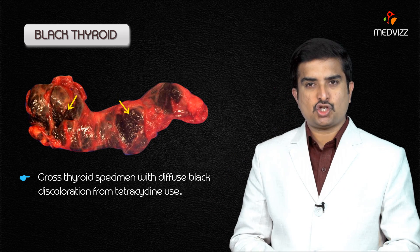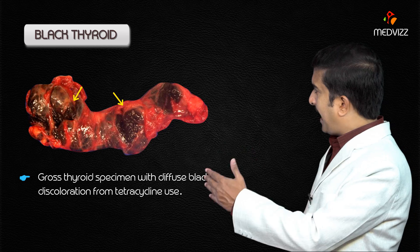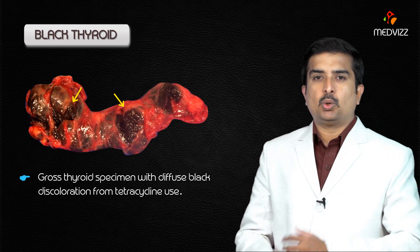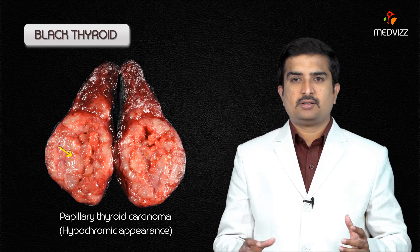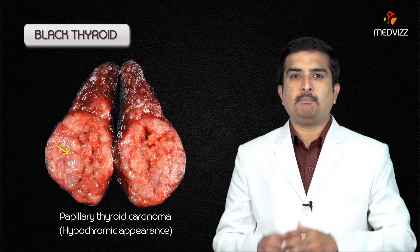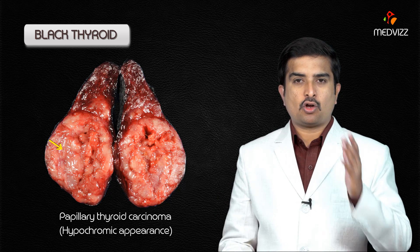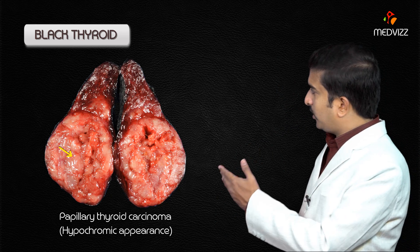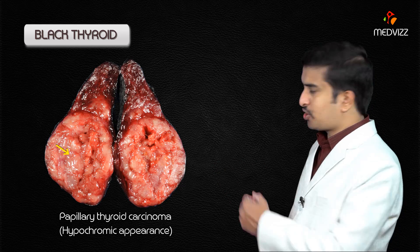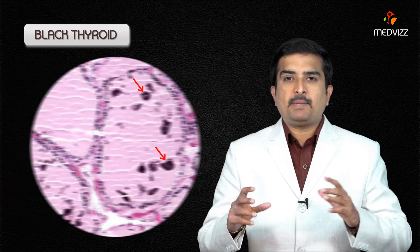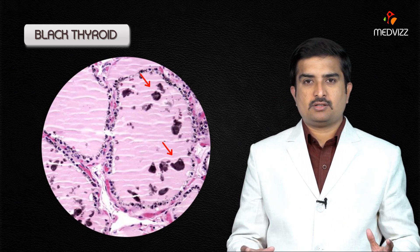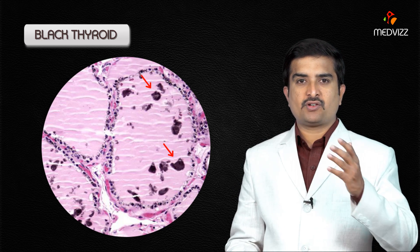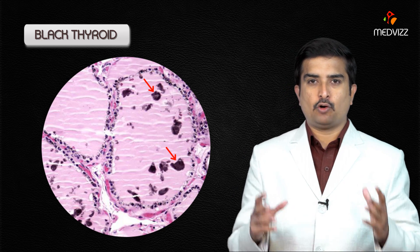Gross examination shows a diffuse black thyroid gland. In contrast, benign and malignant thyroid neoplasms are often hypopigmented. As seen in this image, the pigment accumulation occurs as black amorphous aggregates in the thyroid follicles.